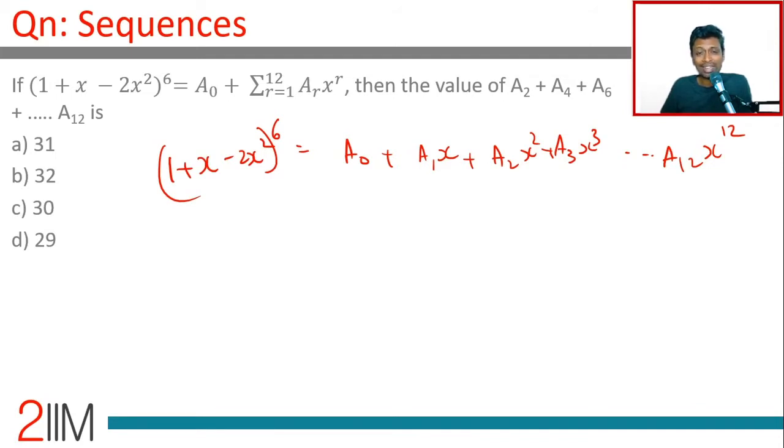If I put x = 0, all the other terms will go away and A₀ will remain. This will be 1⁶. Put x = 0, we get A₀ = 1.